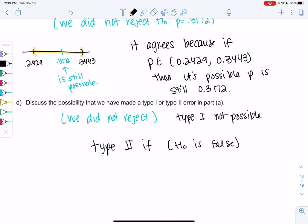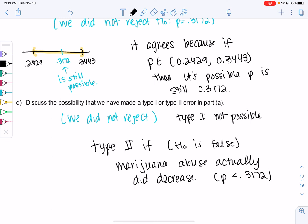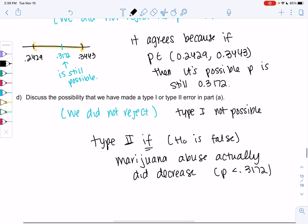I'm putting H0 as false in parentheses because I want to write this in everyday language. So type two would have happened if marijuana abuse—H0 is saying marijuana abuse is the same, so H0 false would mean marijuana abuse actually did decrease, because that would be P less than 0.3172. So we would have made a type two error if in reality 12th graders were using less marijuana, but we don't know that. This is just a big if.